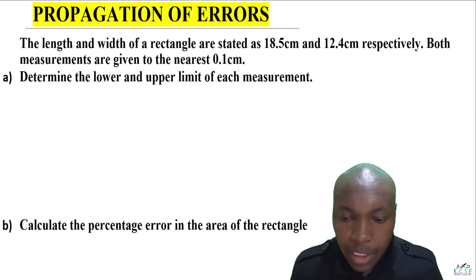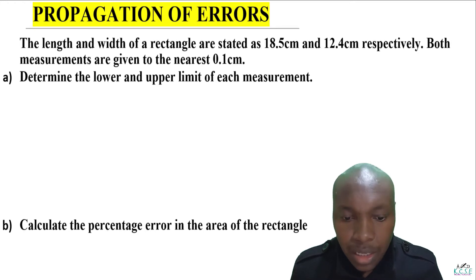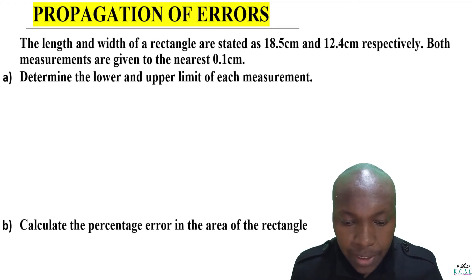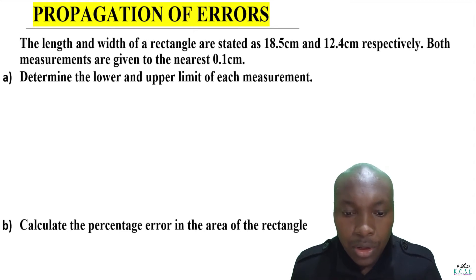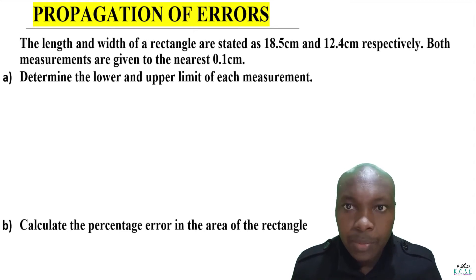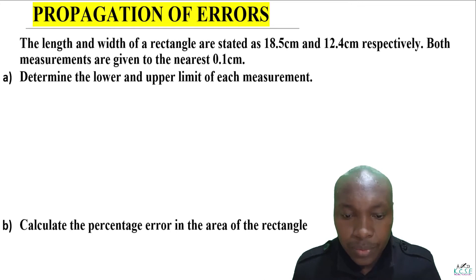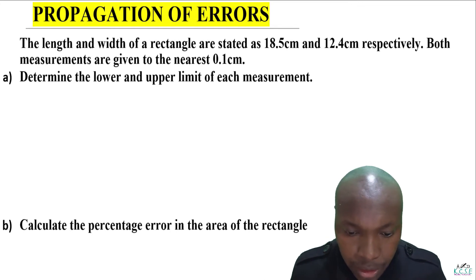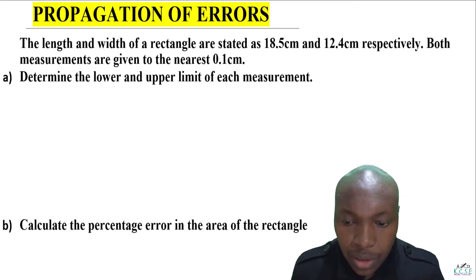Part A of the question asks us to determine the lower and upper limit of each measurement. The second part is to calculate the percentage error in the area of the rectangle. Let's go to the first part: determine the lower and upper limit of each measurement.